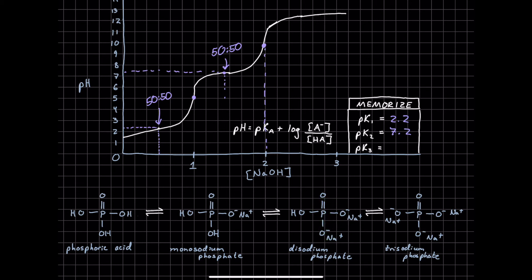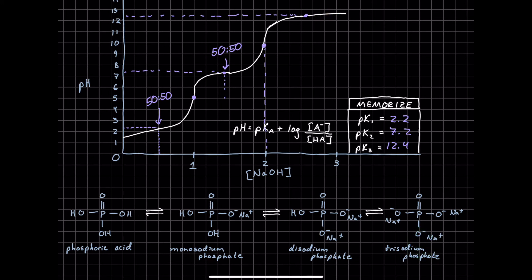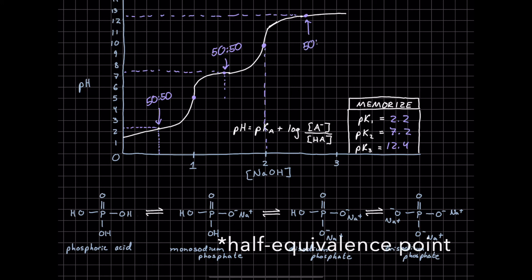And then finally we'll get to our last half-equivalence point, which is going to be at around 12.4. We very rarely see phosphoric acid completely deprotonated like this just because it would take a very high pH to get it fully deprotonated. But it's worth knowing that above 12.4 we're going to get predominantly trisodium phosphate. At this level right here, we're getting predominantly disodium phosphate and just a little bit of trisodium phosphate. So right here we're going to get 50-50 at this equivalence point between disodium and trisodium phosphate.